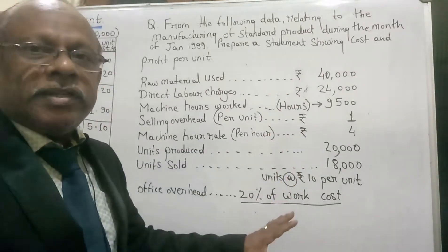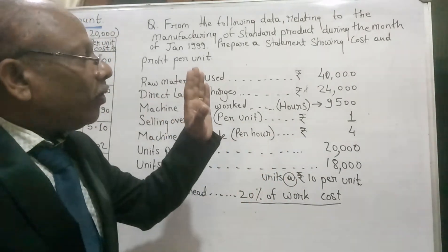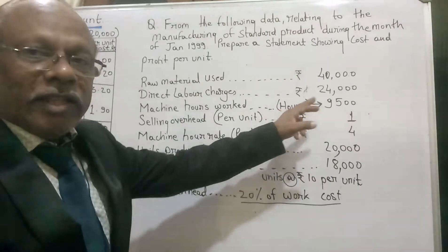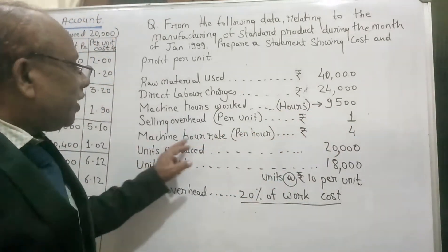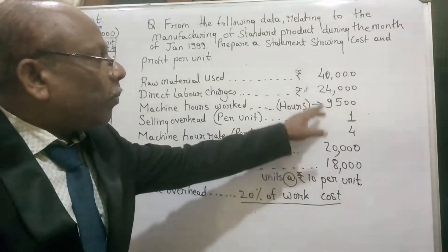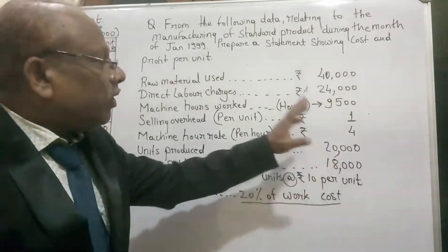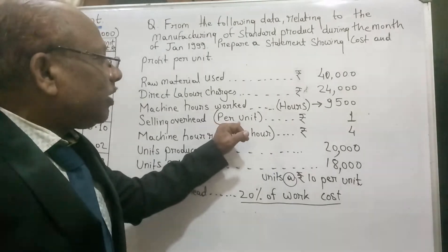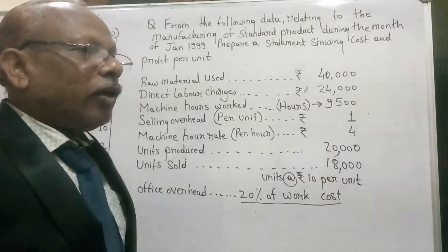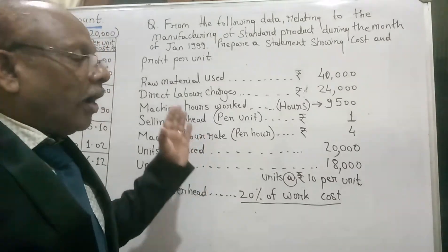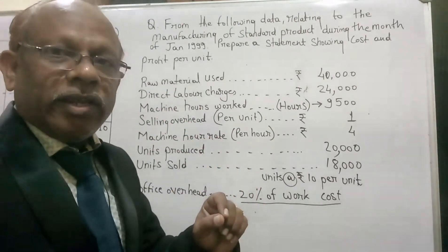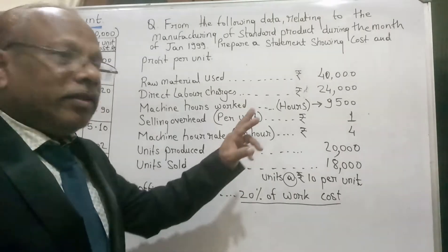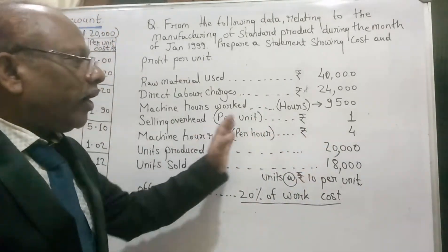You have to understand by which unit to multiply and at what rate. Machine hours worked is 9,500, and the machine hour rate is 4 rupees per hour, so we multiply 9,500 by 4 to get the factory overhead amount. For selling overheads, when unit sold is given we multiply by 1 rupee per unit sold.